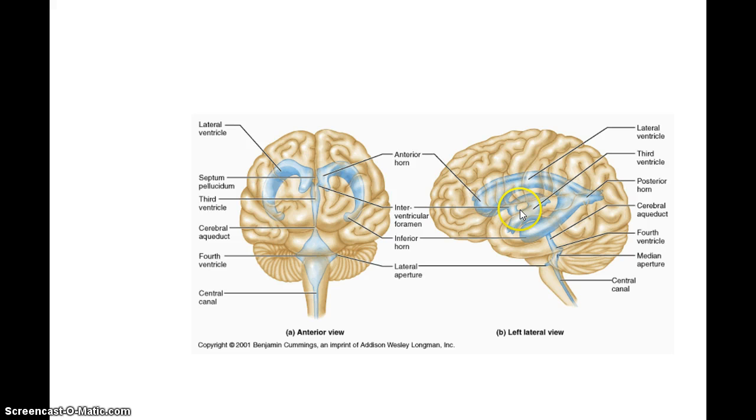And again, you can't see the third ventricle very well on the brain itself. You can see the area. It's around, if you want to get an idea, it's around that thalamus and hypothalamus area. So again, cerebrospinal fluid flows through these, as well as around, okay, through the meninges and around the spinal cord.